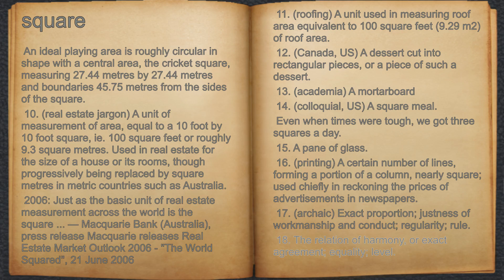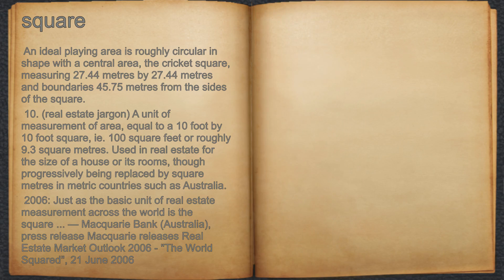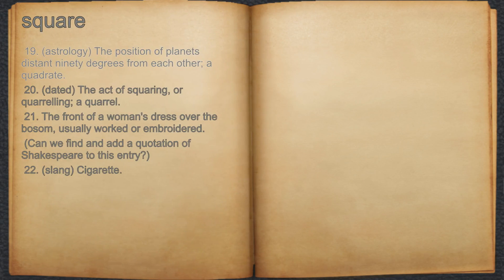18. The relation of harmony, or exact agreement, equality, level. 19. Astrology, the position of planets distant 90 degrees from each other, a quadrate.